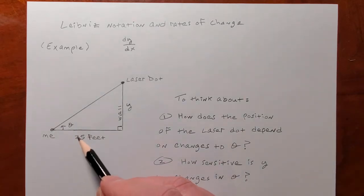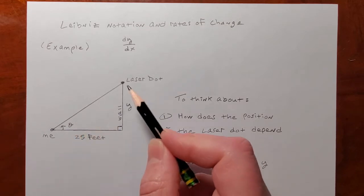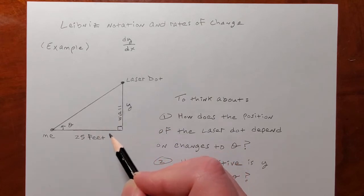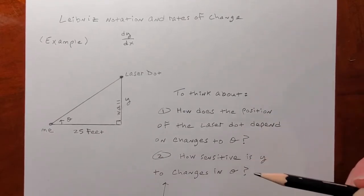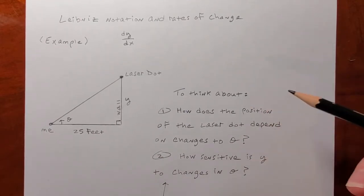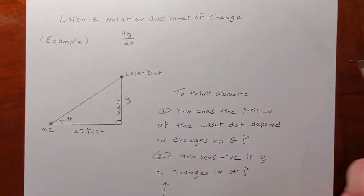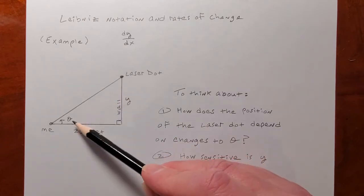So that's the situation — theta, y, the laser dot, me, the wall. You can think of it as a triangle. Here's where calculus begins to enter the picture. How does the position of that dot on the wall depend on any changes to that angle?